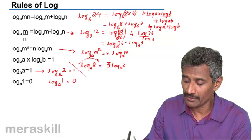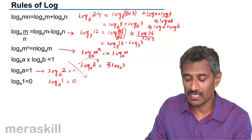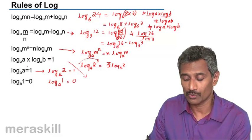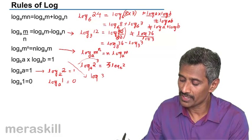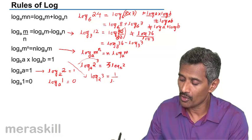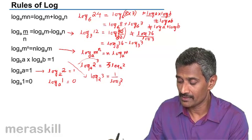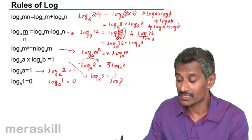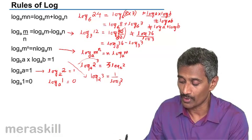Another very important rule is this: log of a to the base b into log of b to the base a is 1. In other words, if you have a number, say log of 3 to the base 2, it is the reciprocal of log of 2 to the base 3. When you interchange the power and the base, the logarithms become reciprocal of each other. Log of 3 to the base 2 into log of 2 to the base 3 equals 1.